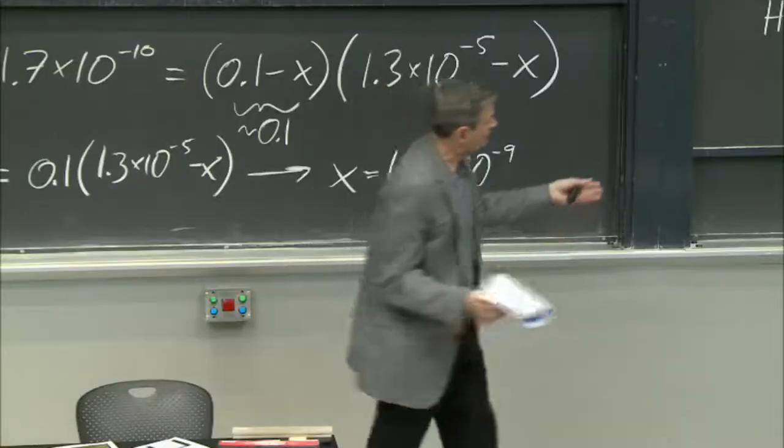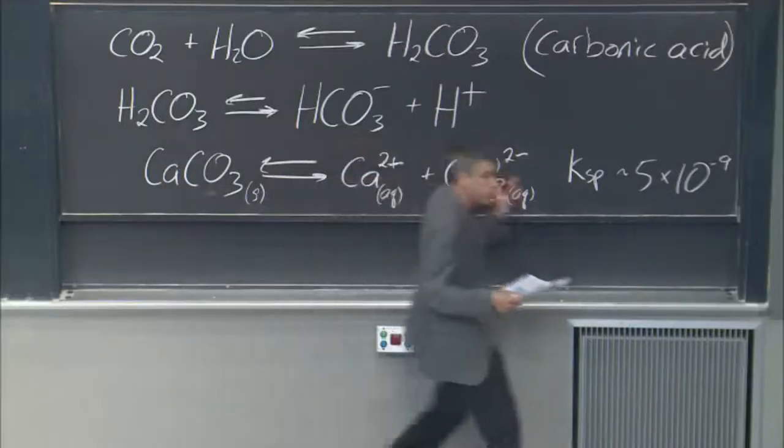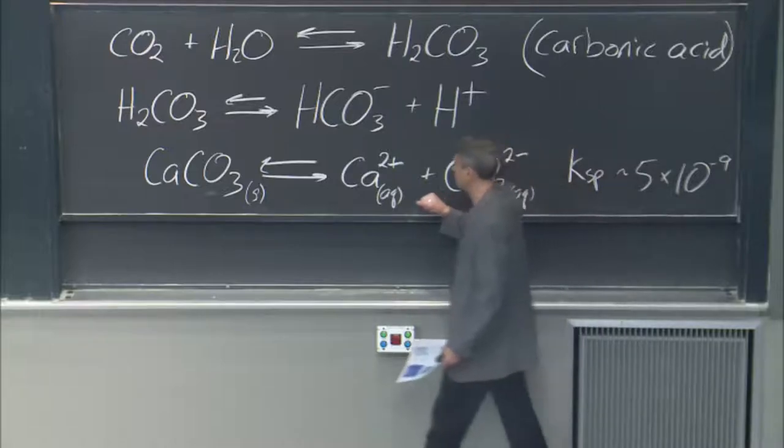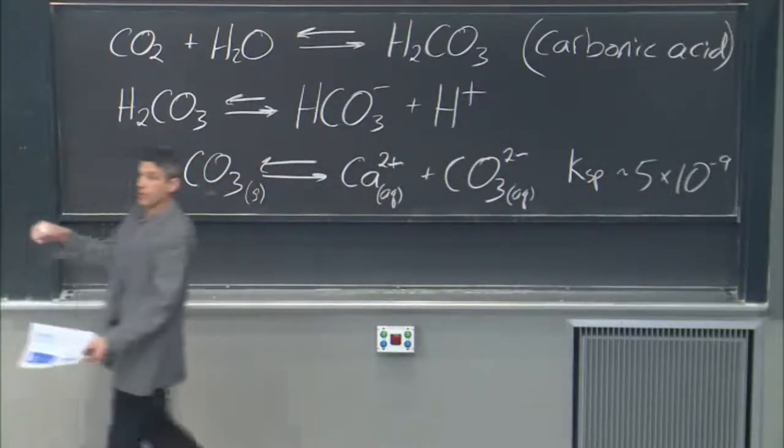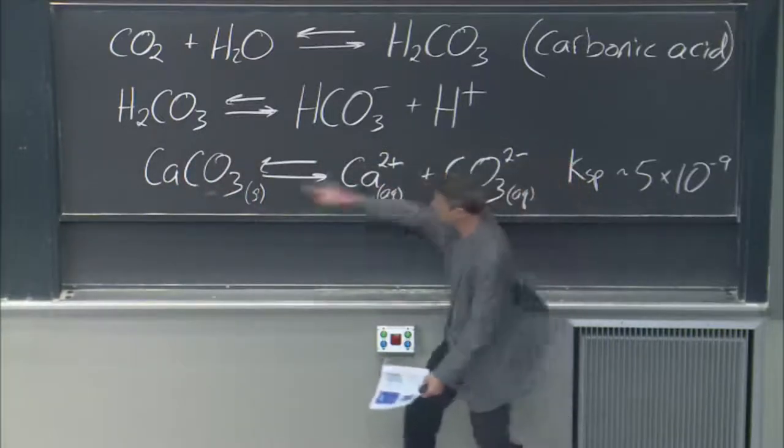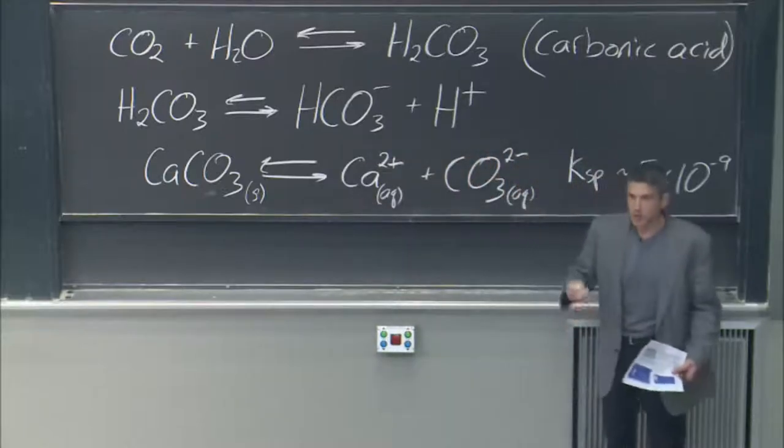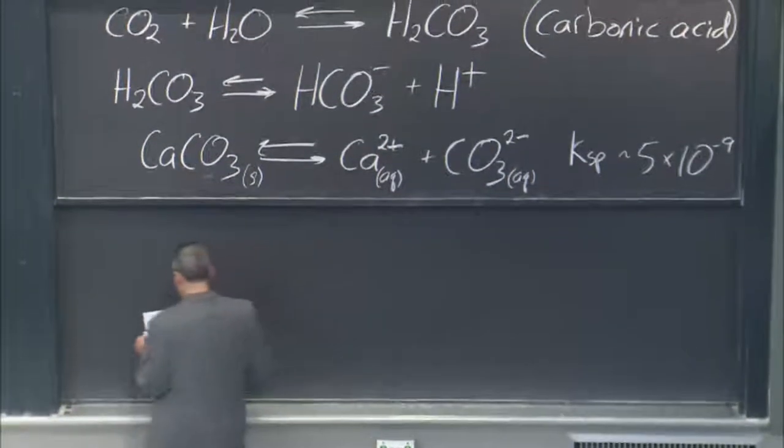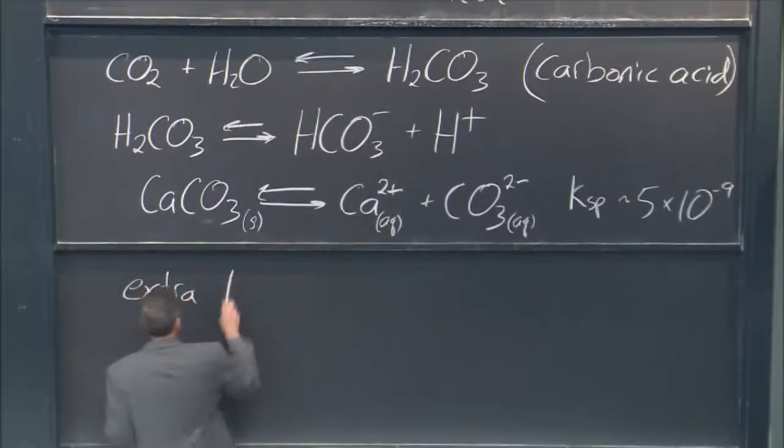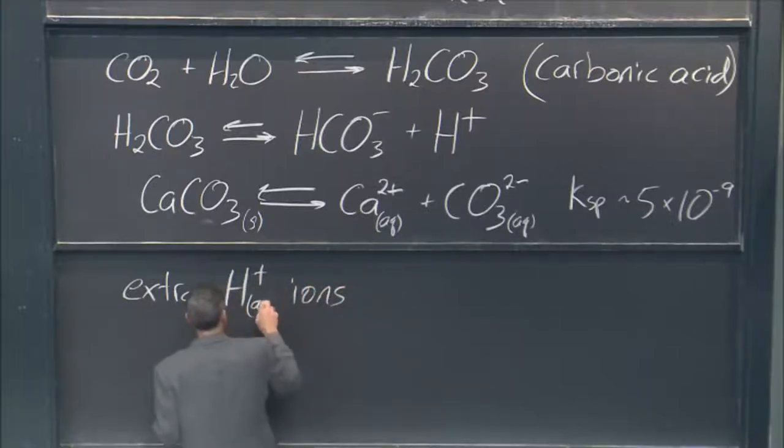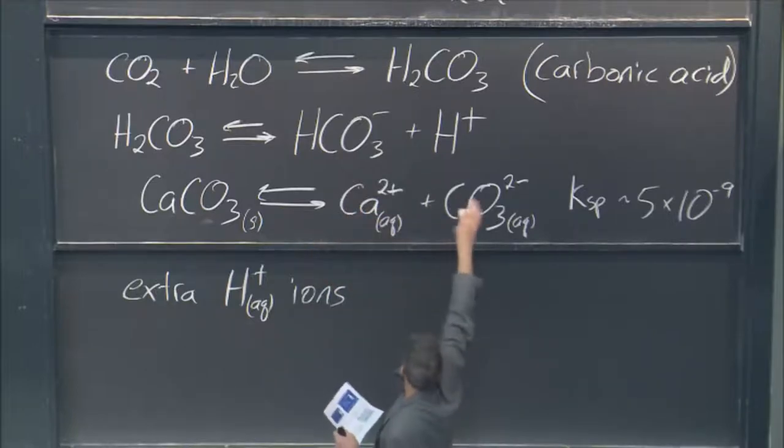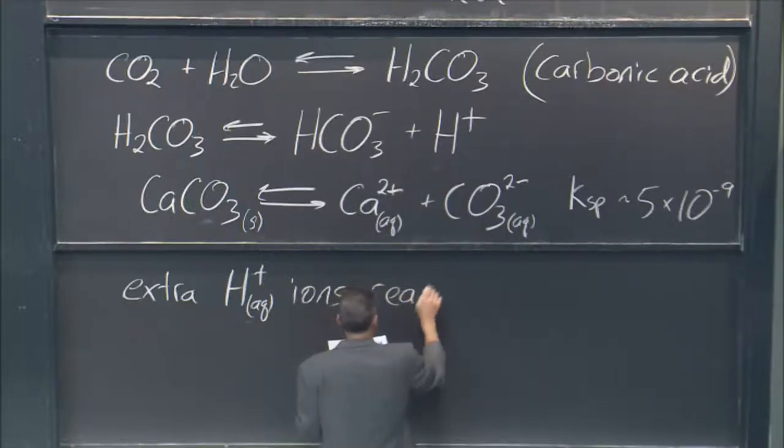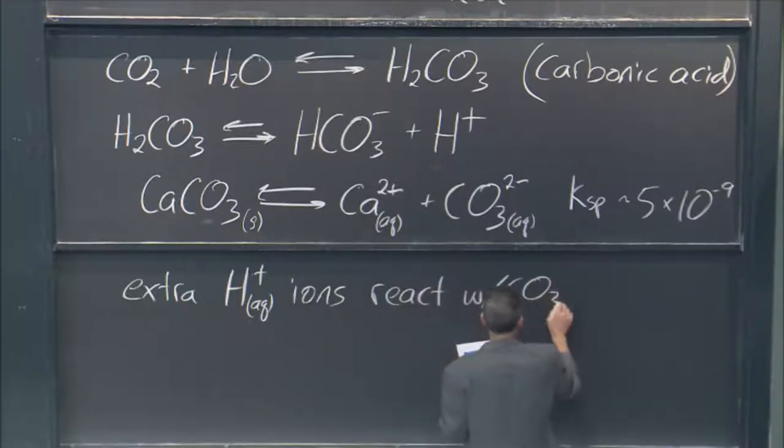But here's the thing. We just went through this. If I consume one of these or change the concentration of one of these and not the other, then I might drive the reaction. If I change any of these independently, I'm going to drive the reaction, because that's how we keep to our K. That's what Le Chatelier's principle tells us. And so what ends up happening is you've got the extra H+ ions. Where did they come from? They came from the CO2 giving us carbonic acid, which then gave us H+.